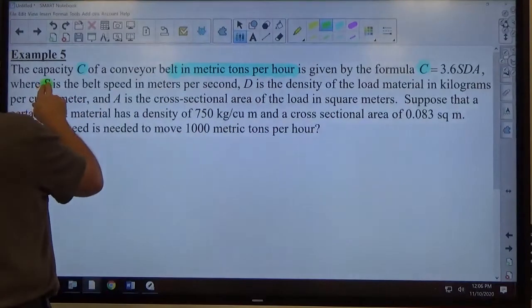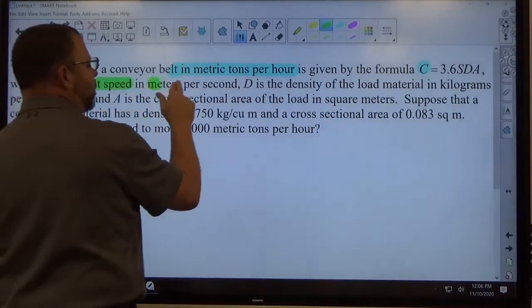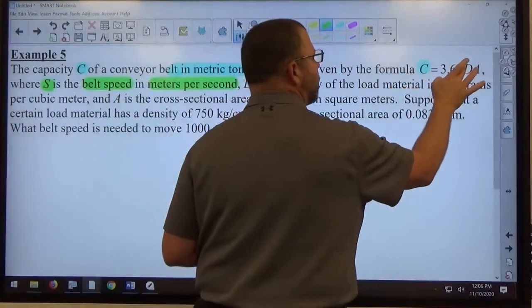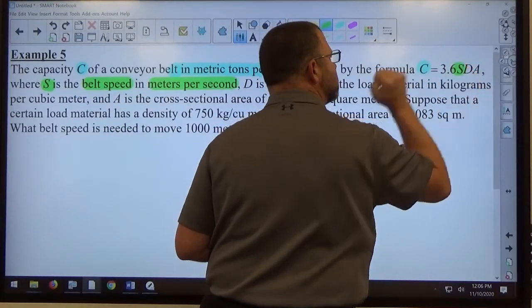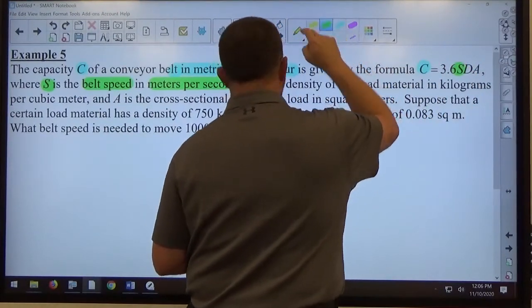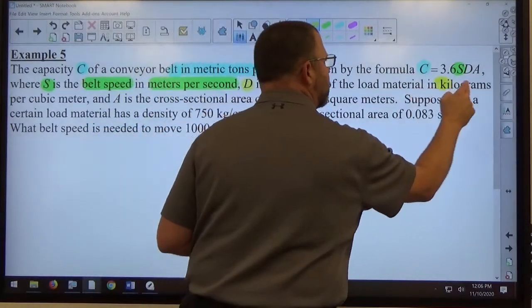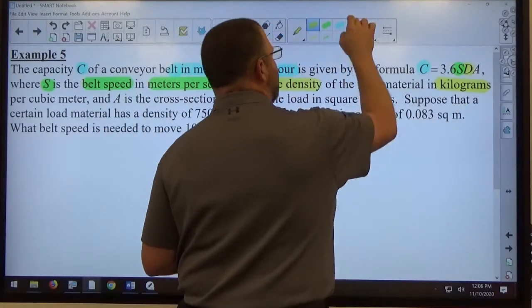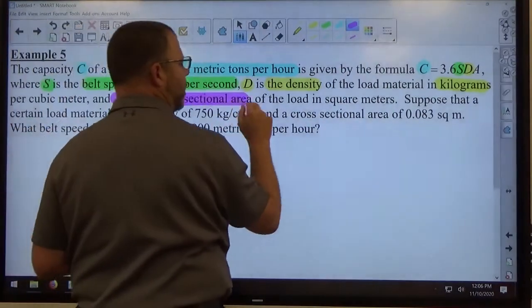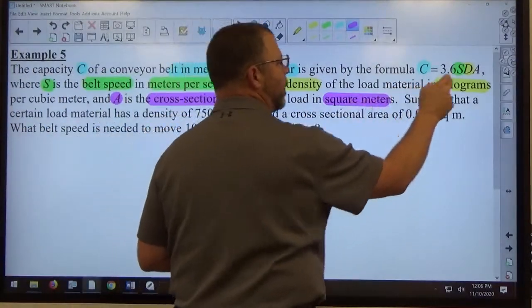S is the belt speed in meters per second, that's what S is. D is the density in kilograms, that's what D is. And then A is the cross-sectional area in square meters, that's what A is.